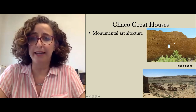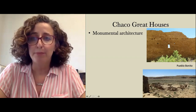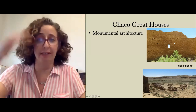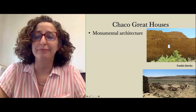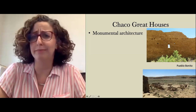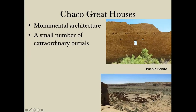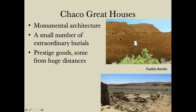This is Pueblo Bonito. It has four, maybe even five stories in some places — truly monumental with more than hundreds of rooms. Within Pueblo Bonito there are also burials unlike anything else we see in the Southwest, with a lot of prestige goods: turquoise, shell from the Pacific Ocean, copper bells from Mexico. So these are special people in some way. We also have lots of evidence of ritual activity and sacred objects.